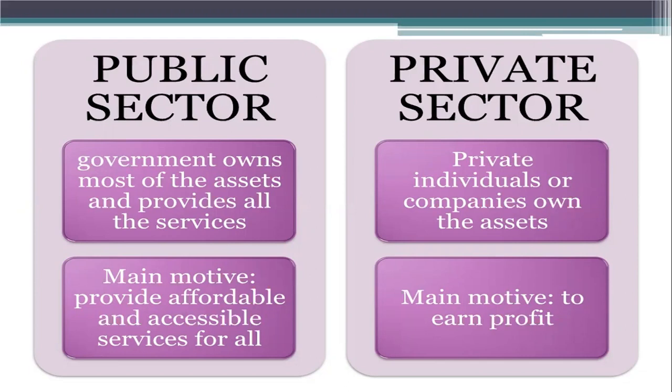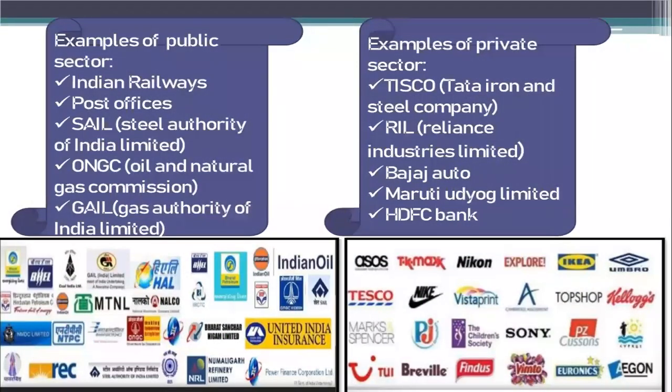So these are the major differences between public sector and private sector. In the public sector, assets are owned by the government and they provide all the services. In the private sector, assets are owned by companies and individuals. Another difference is the motto: in the public sector the main motto is to provide affordable and accessible service for everyone, whereas in the private sector the main motto is to earn profits.